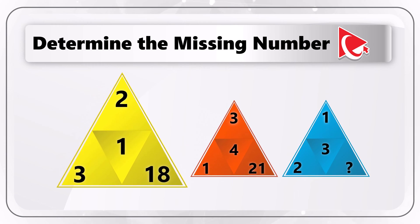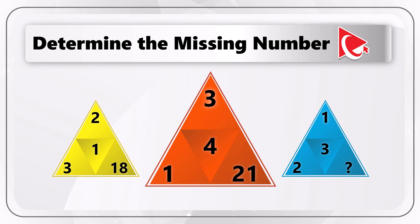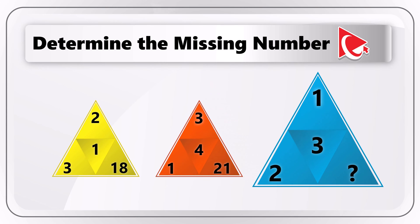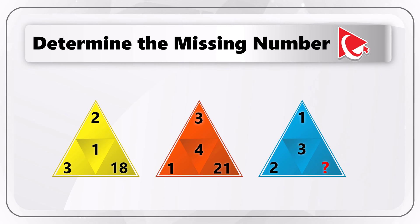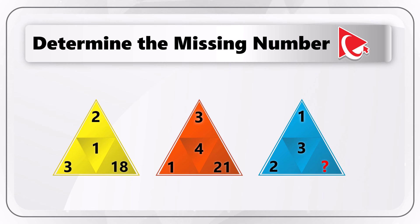The first triangle has numbers 2, 18, and 3, and the digit in the middle is 1. The second triangle has digits 3, 21, and 1, and then 4 in the middle. The third triangle has digits 1, 2, digit 3 in the middle, and then comes the missing number, which you need to calculate out of four possible choices.